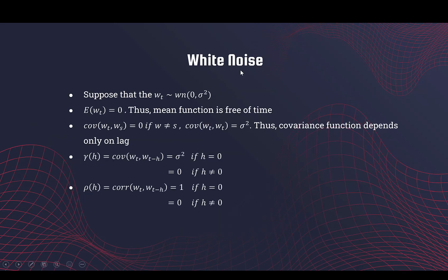Let's verify that white noise is weakly stationary. We know that its mean or expected value is zero for any time point, so the mean is free of time — the first condition is satisfied. The autocovariance function depends only on the lag, so the second condition is satisfied. Therefore white noise is weakly stationary.